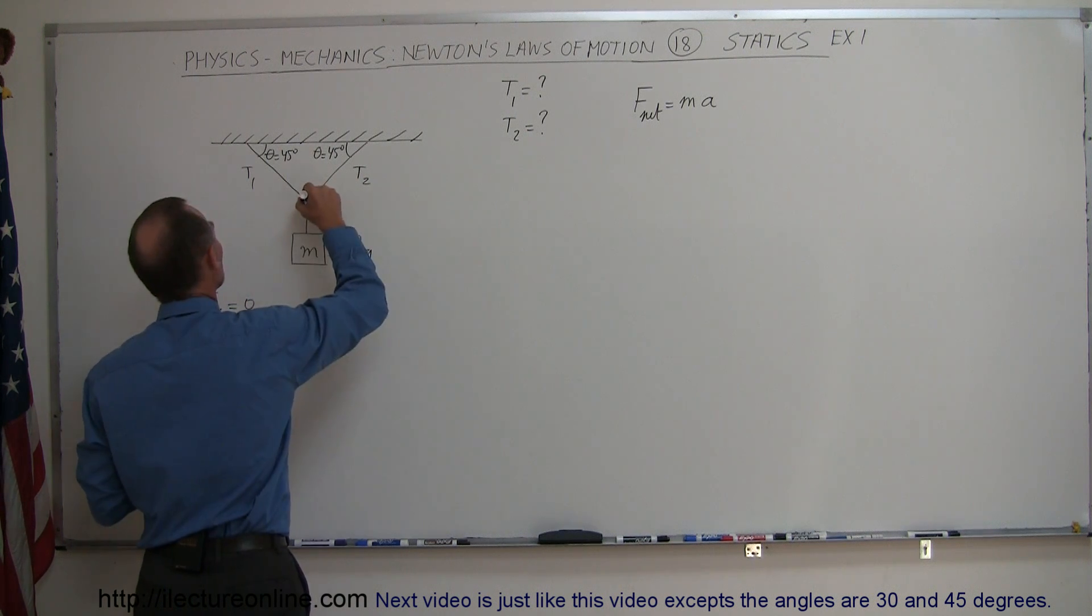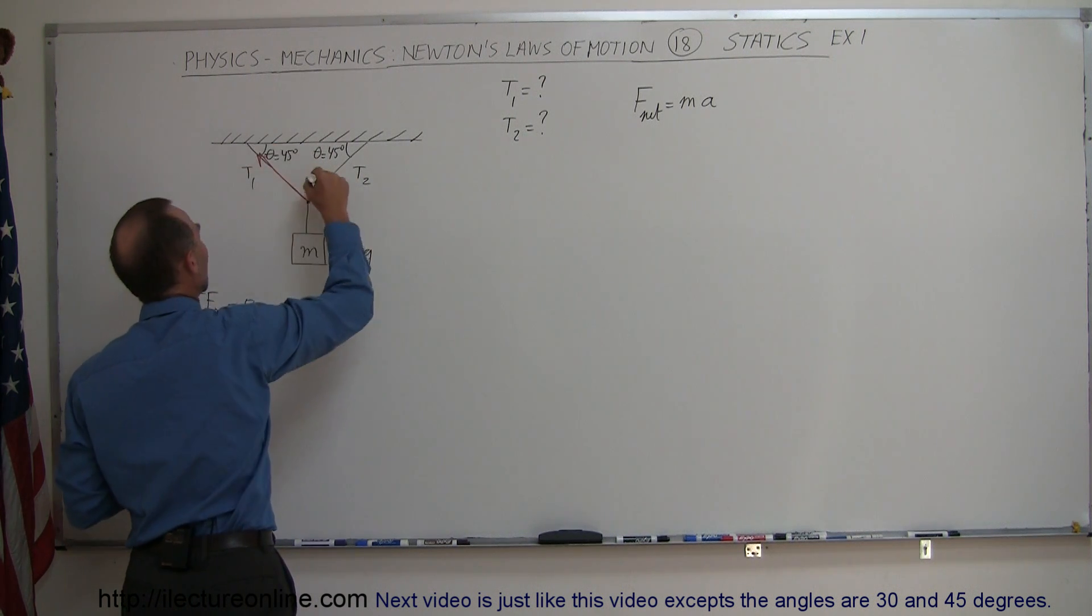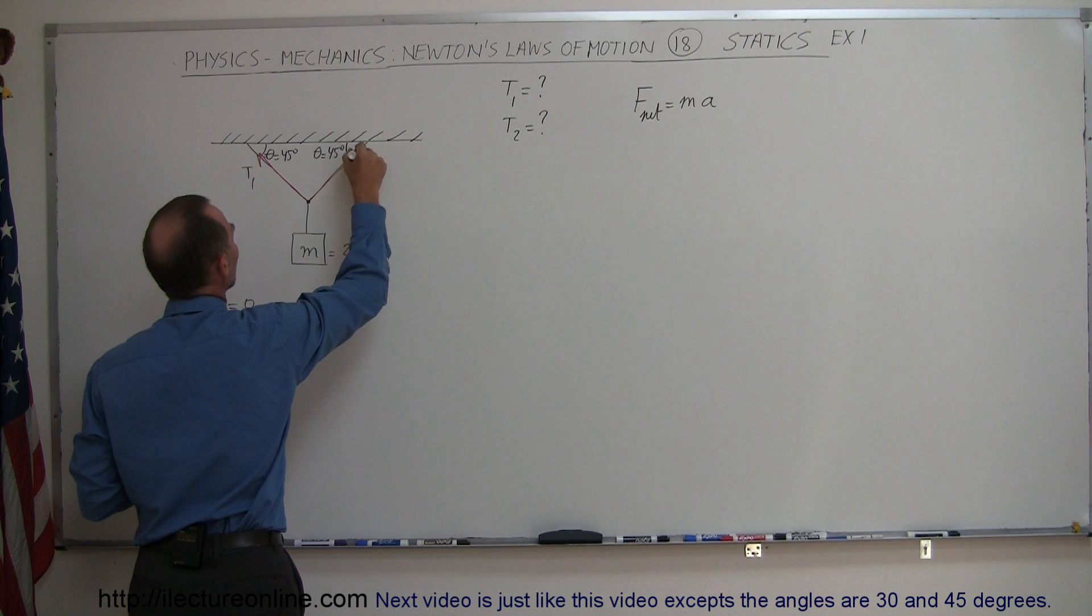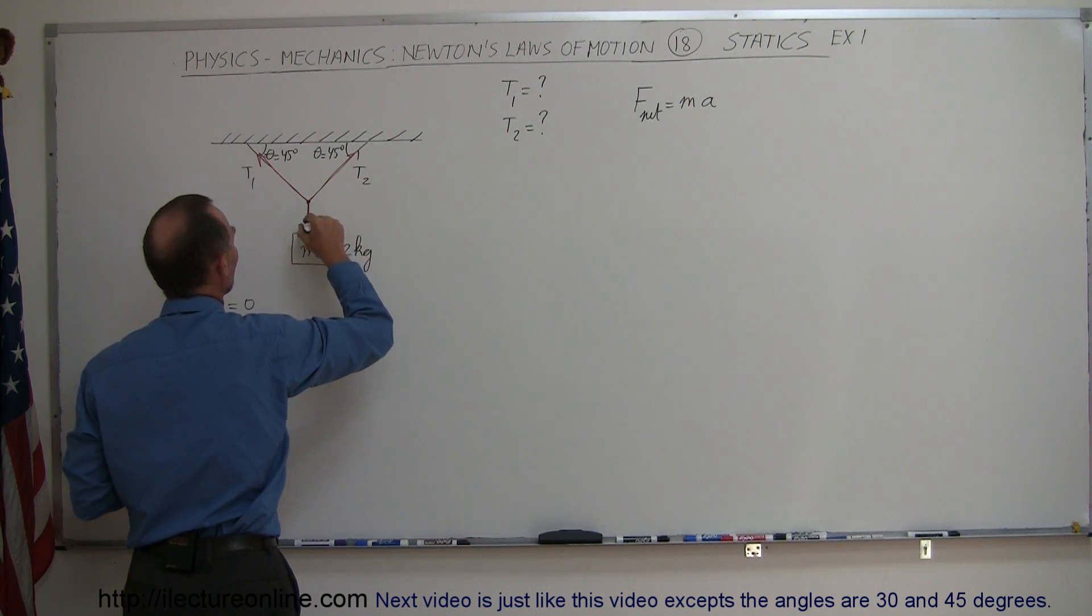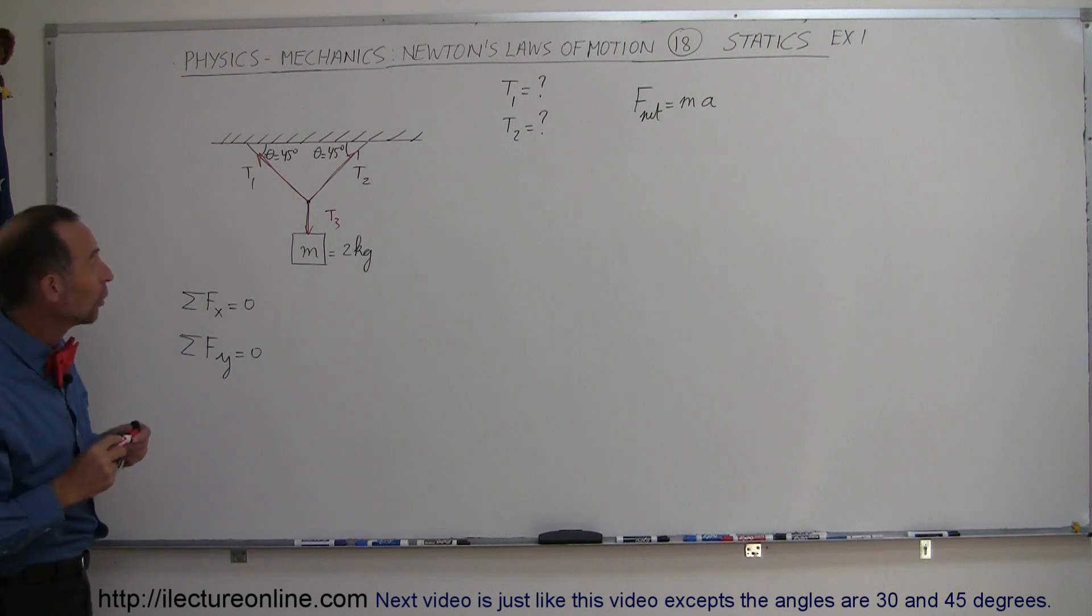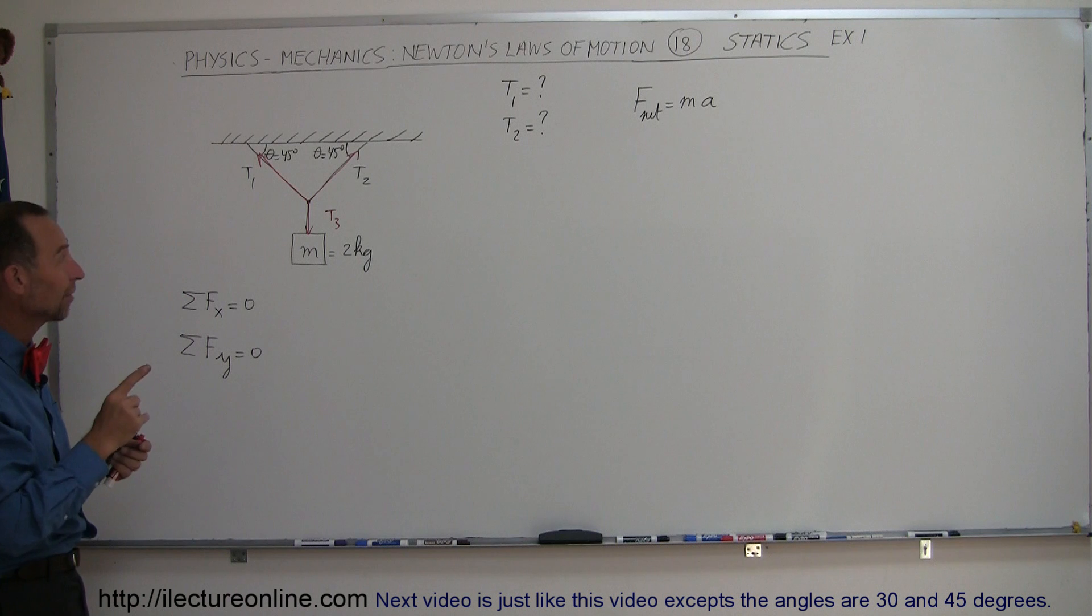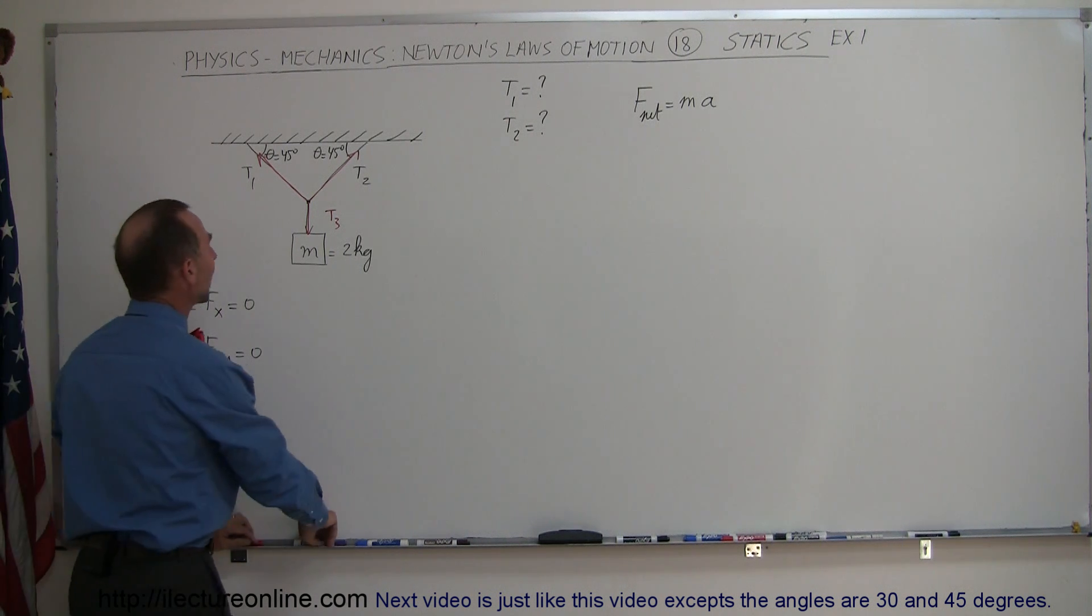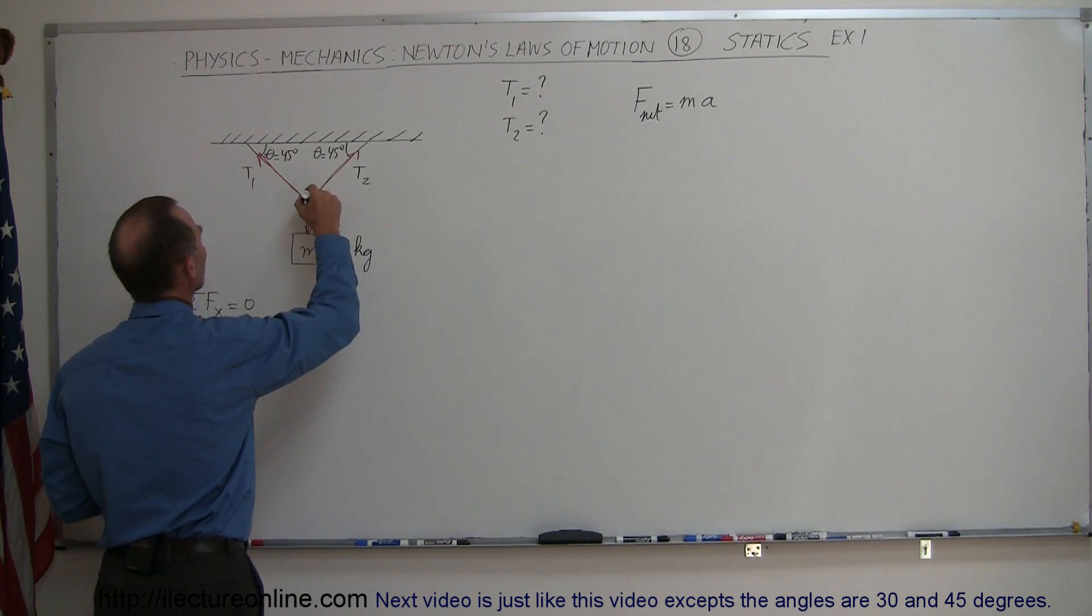Let's draw them. We have tension number one, which is pulling in this direction. We have tension number two, which is pulling in this direction. And then we have tension three, pulling in a downward direction. Notice that tension three is in the vertical direction, but tension one and two are not. They're off at an angle, so we have to find the x and y components of tension one and tension two.